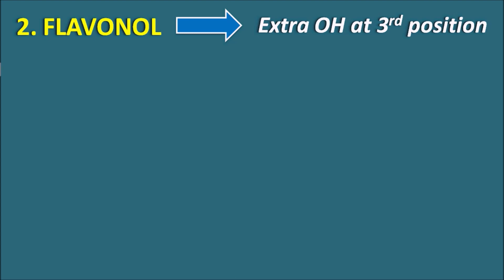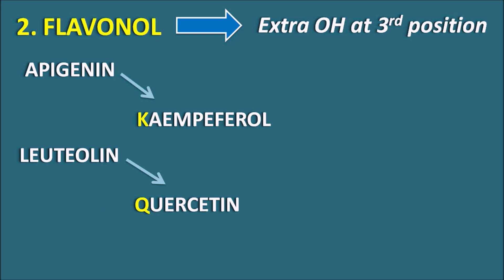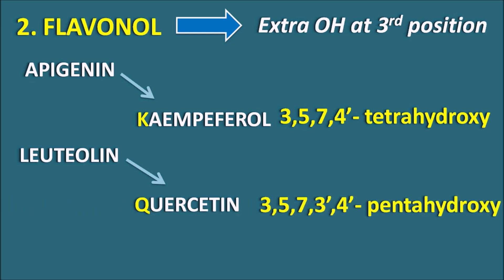We can relate flavonols back to the flavones. Apigenin can be modified by adding an extra OH group at the third position to give kaempferol. Similarly, luteolin can be modified to give quercetin. Apigenin is trihydroxy, so kaempferol becomes tetrahydroxy — 3,5,7,4'-tetrahydroxy. Quercetin gains an extra OH at the third position, becoming pentahydroxy — 3,5,7,3',4'-pentahydroxy.